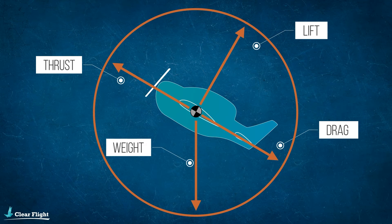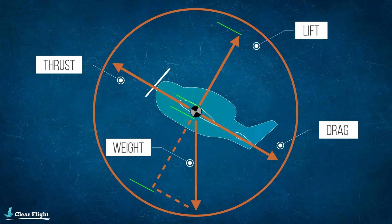Weight can be divided into two components, one component opposing the lift and the other acting parallel to the relative airflow. The lift is now slightly reduced since the weight component opposing it is reduced.